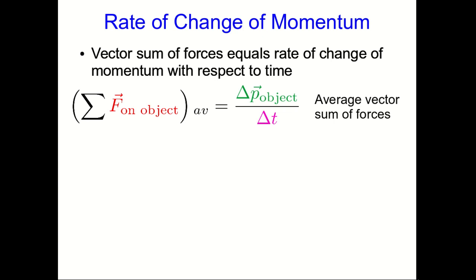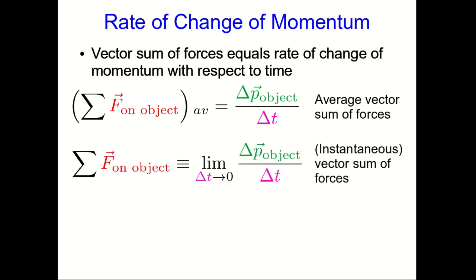Well we know what to do with this. We take the limit as our time interval goes to zero and now we have an instantaneous rate of change of momentum which is equal to the instantaneous vector sum of forces. As usual, if I don't say average I mean instantaneous, and so I won't usually say instantaneous.